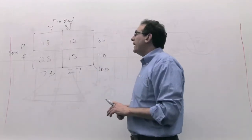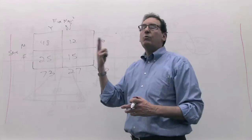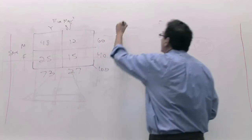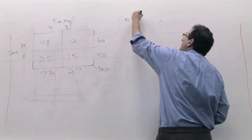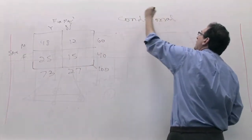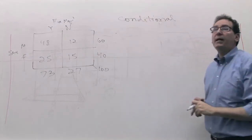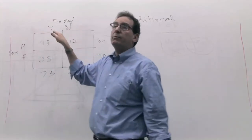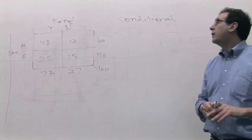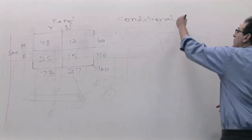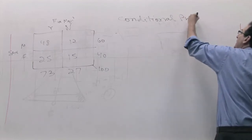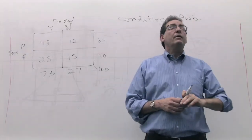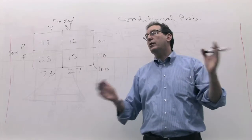There are two more sections of the chapter I'd like to cover, and they're both interrelated. One is called conditional probability, which we'll do first. Then we'll answer the question: are the two variables independent? In other words, does knowing somebody is male or female help you predict if they're going to be a finance major — which is a very important part of practical statistics.